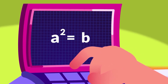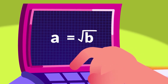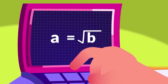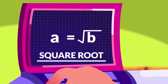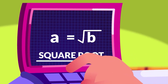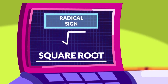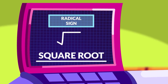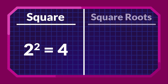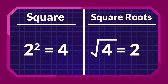Meanwhile, square roots are the inverse operation of squaring. So the number that is multiplied by itself is called the square root. A square root is represented by the symbol radical sign. In our previous example, 2 squared equals 4. Hence, we can say that 2 is the square root of 4, or the square root of 4 is 2.